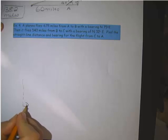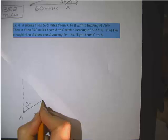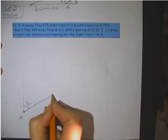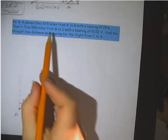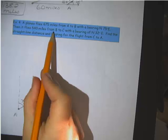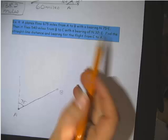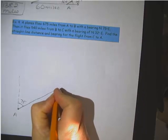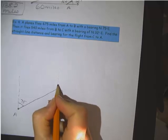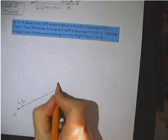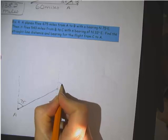We're going 75 degrees east. So get an acute angle in there. And it travels along until we get to B. Then it flies 540 miles from B to C with a bearing of 32 east of north. Okay, so we're turning. Again, we want another northern axis.